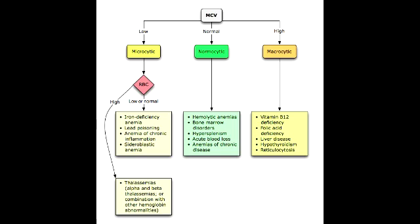Name all the non-hemolytic normocytic anemias. The non-hemolytic normocytic anemias include anemia of chronic disease, aplastic anemia, and anemia caused by chronic kidney disease.